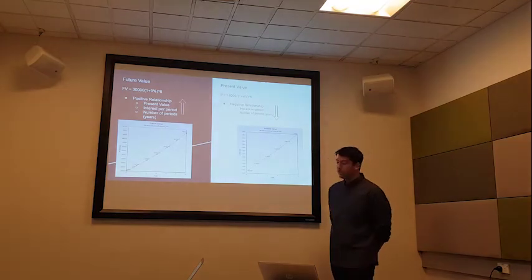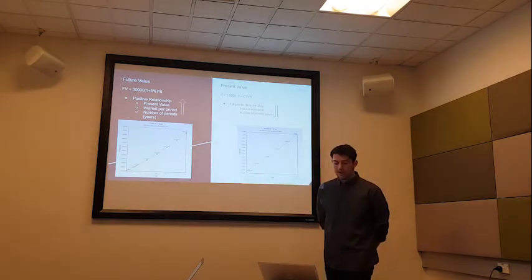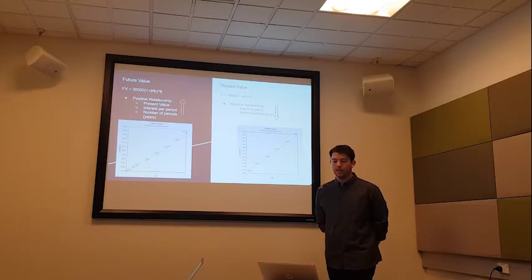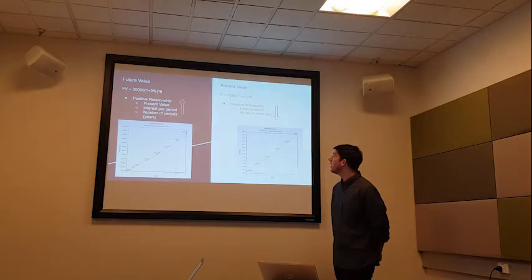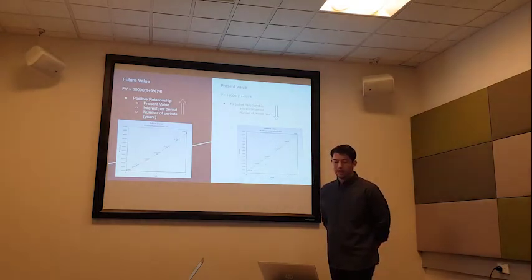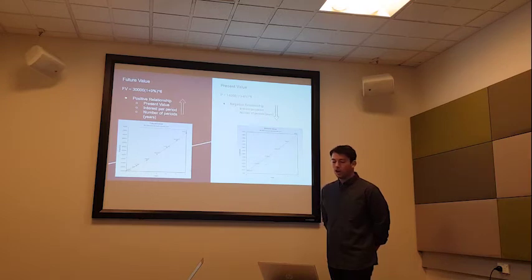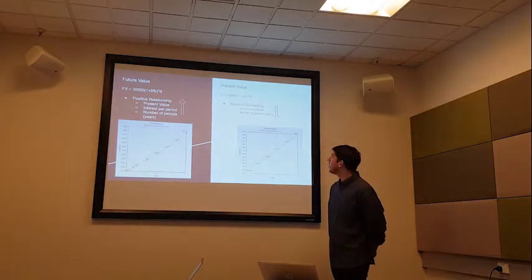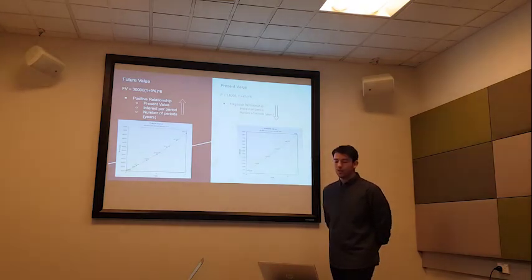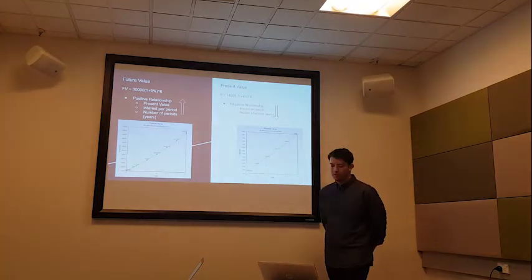For the present value, we have the question: David would like to have savings of $14,000 in an account at the end of 5 years — calculate the amount he needs to save now if the savings account earns an annual effective rate of return of 4%. We have the equation shown. The present value has a negative relationship, unlike the future value which had a positive. So if the values of interest or the number of periods is increased, this will have a negative effect towards the present value — it will decrease it.